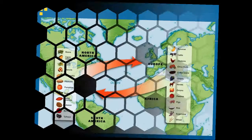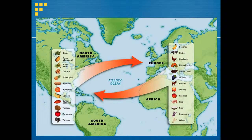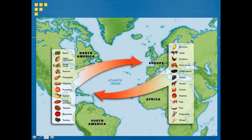This map is extremely important — it basically breaks down plants and animals that started off on one side of the ocean and went to the other. On the left side, plants that came from North America were beans, chocolate, corn, peanuts, pineapples, potatoes, pumpkins, squash, sweet potatoes, tobacco, tomatoes, and the animal we have is turkeys. All of those things started off in North and South America and people from Europe, Africa, and Asia had never seen them before — they were not part of their diet at all.